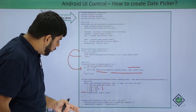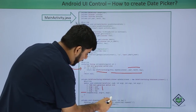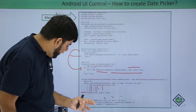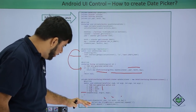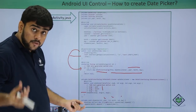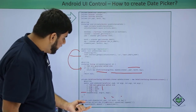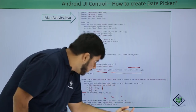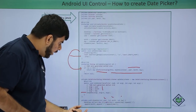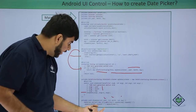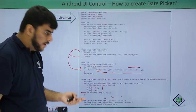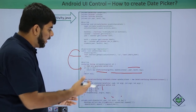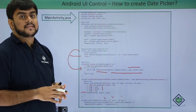The showDate method also takes three parameters: year, month, and day. Inside this method, we take a reference to the text view and set its text by appending the day, then a slash, then the month, then a slash, then the year. This date is then automatically displayed on the screen.